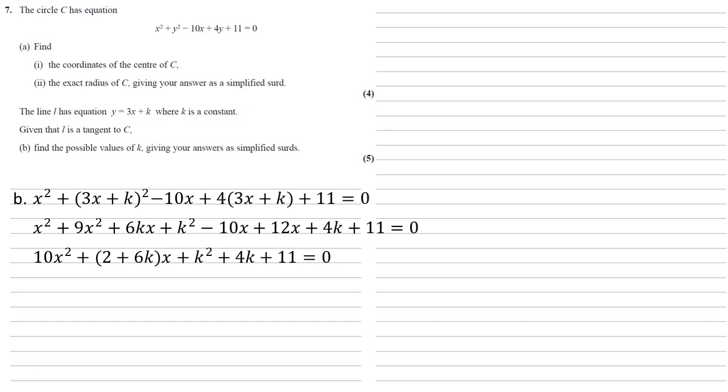Now if we were to solve this for x, this would give us the x coordinates of any points where the line and circle intersect. But as we know that L is a tangent to C, the circle and line can only meet at one point. So thinking of our quadratic formula, the only way to get exactly one answer is if b squared minus 4ac is equal to 0.